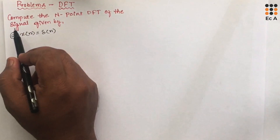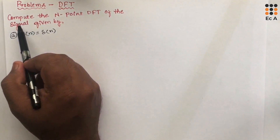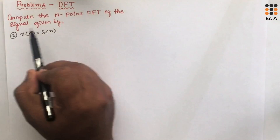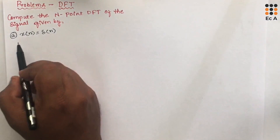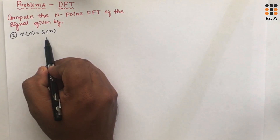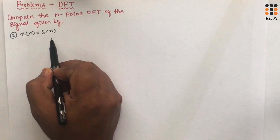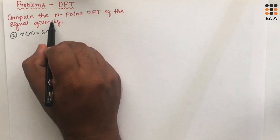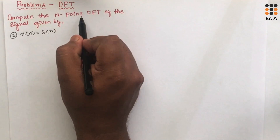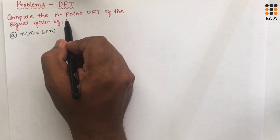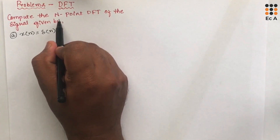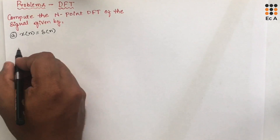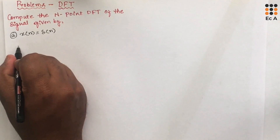Let us consider the first problem where they are asking us to compute the N-point DFT of the signal x(n) = δ(n). In an exam, they can ask you to find N-point DFT, 4-point DFT, or 8-point DFT likewise. To solve this problem, first let us write the formula for DFT.